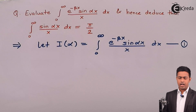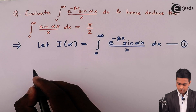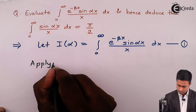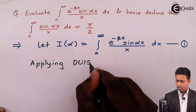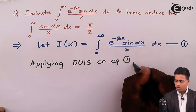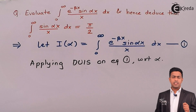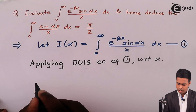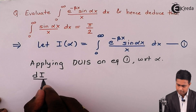We will find the value of dI by d alpha. Applying the DUIS rule on equation number one with respect to alpha — because we have considered alpha as the parameter — we will get, by the rule of DUIS, dI by d alpha equals...